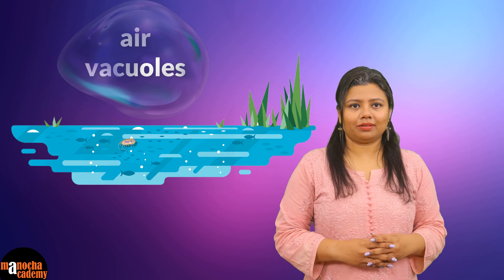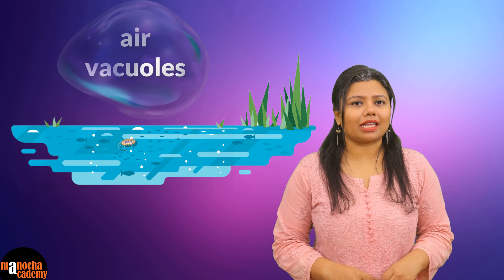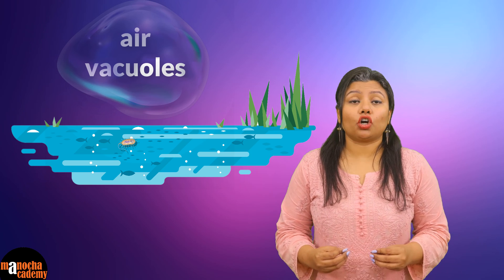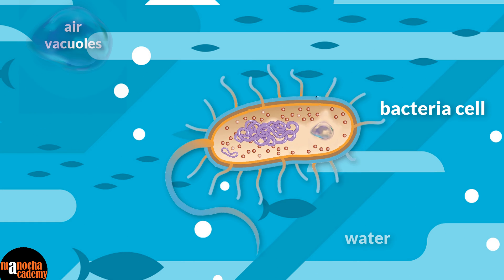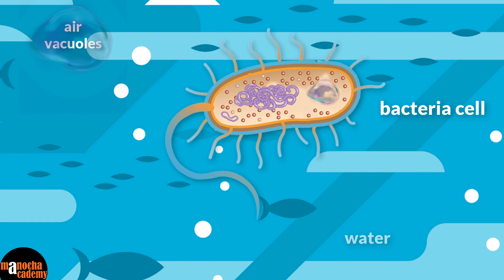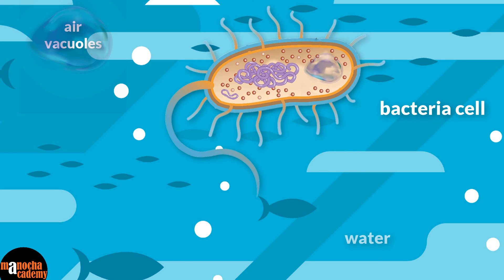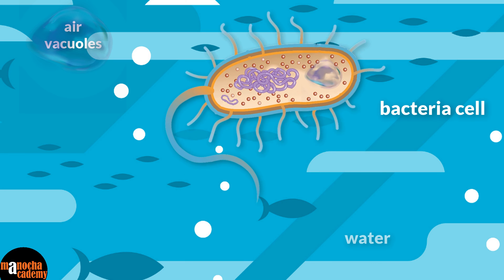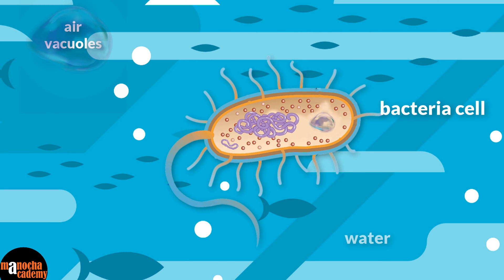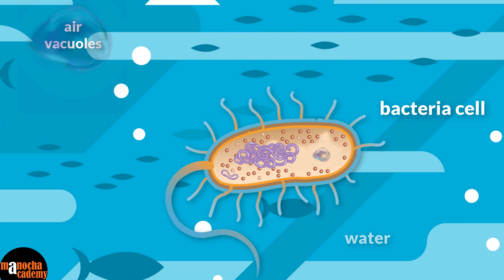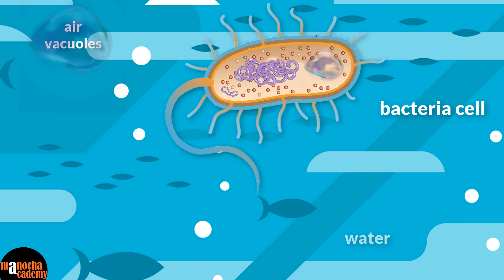Last but not the least, as found in prokaryotes, there is something called an air vacuole. As the name suggests, these are capable of storing gases. The gases not only help in respiration, but also make the cell buoyant so that the bacterial cell can float at different levels in the water. It is also responsible for giving the cell a certain degree of strength. Exclusively found in prokaryotes, these gas vacuoles are important for buoyancy of the cell.